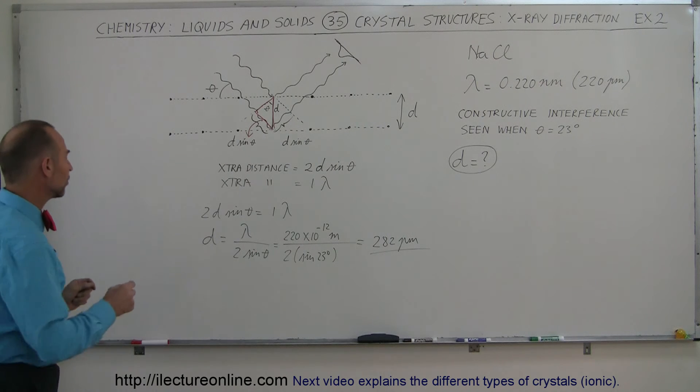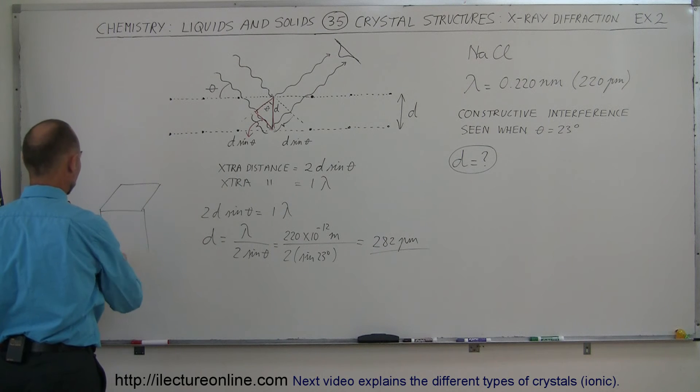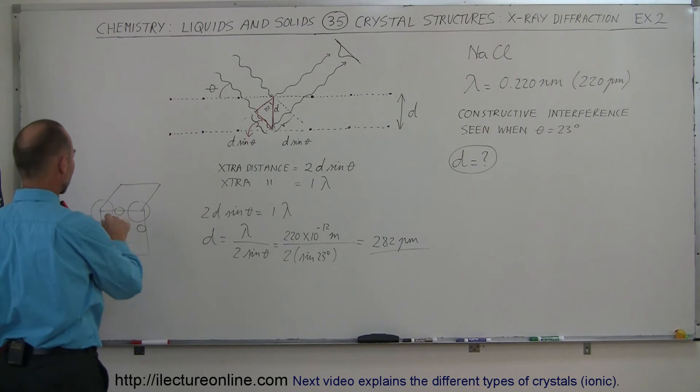If we then look at the unit cell structure for sodium chloride, notice it kind of looks like this. We have a sodium ion, a sodium ion, a chlorine ion, sodium, chlorine, chlorine, the other way around, chlorine,